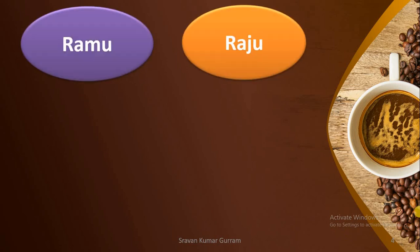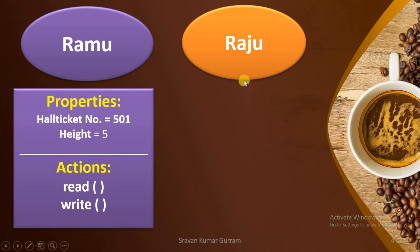Before discussing the actual definitions of class and object, let us take a simple example for better understanding of the concept. Let us say we have two students, Ramo and Raju. Every student has some properties like hall ticket number and height. Ramo's hall ticket number is 501 and his height is 5 feet. Every student can also do some actions like read and write, so Ramo can read and write.